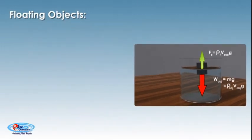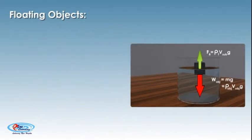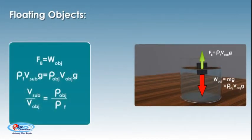Volume submerged by volume of object equals density of object by density of fluid. Thus the fraction of the floating object that is submerged stands in ratio to the density of the object to the density of the fluid.